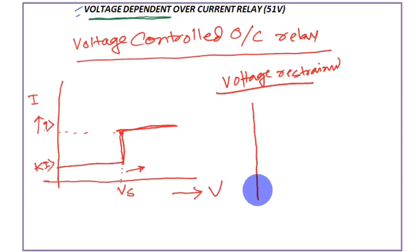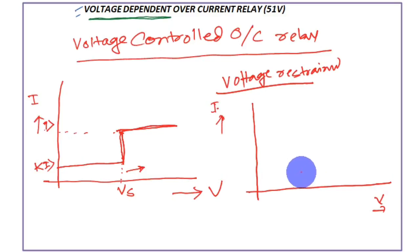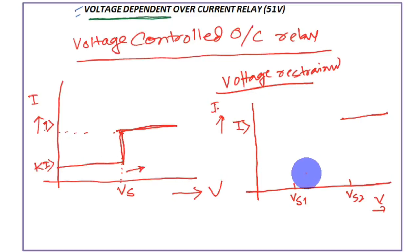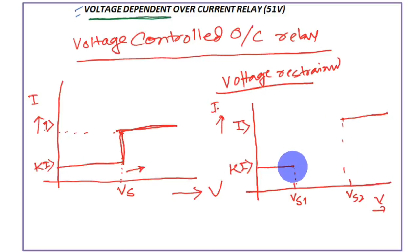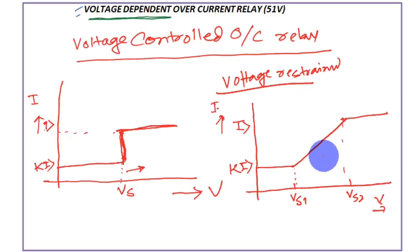In the voltage restrained overcurrent relay, there are two voltage set points: Vs1 and Vs2. Above Vs1, the pickup current is I_greater_than; below Vs2, the pickup current is Ki_greater_than. Between Vs1 and Vs2 there is a sloped transition — not an instantaneous step — which gives an IDMT-like characteristic. The more the voltage has fallen, the lower the pickup current, and the earlier the relay will pick up.